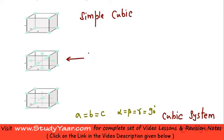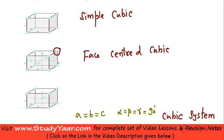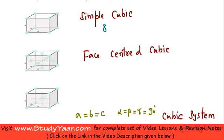The next one is known as a face-centered cubic lattice. In a face-centered cubic lattice, you do have eight corners with eight lattice points at those eight corners, and you have an additional six lattice points at the six faces — at the center of each face, you have an additional lattice point.